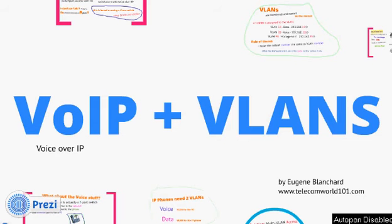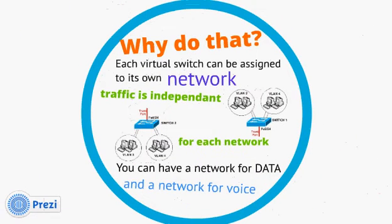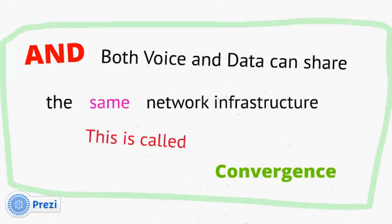So Voice over IP and VLANs. The question is, what is a VLAN? It's short for Virtual LAN — LAN is a local area network. You take an Ethernet switch and pretend to divide it into two or more switches, so it appears like two separate switches. We call them virtual switches. Each virtual switch can be assigned to its own network, and the traffic is independent for each network within that switch. You can have a network for data and a network for voice, and both can share the same network infrastructure. This is called convergence.